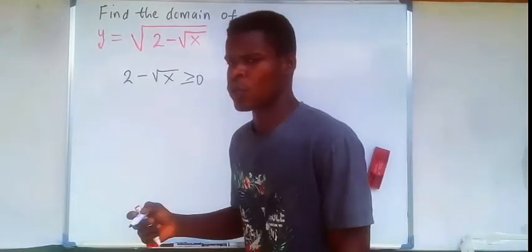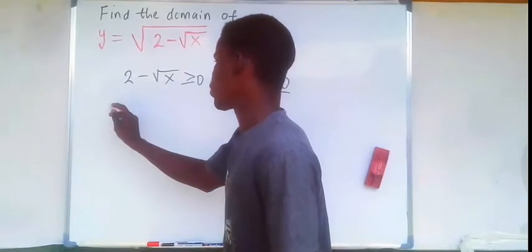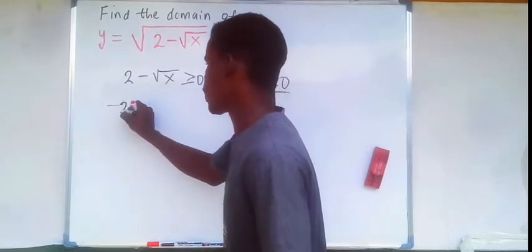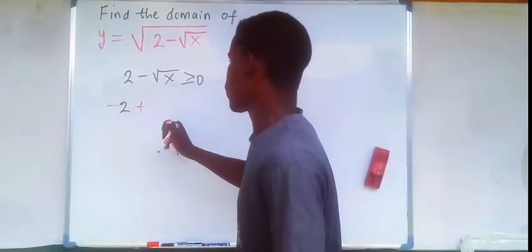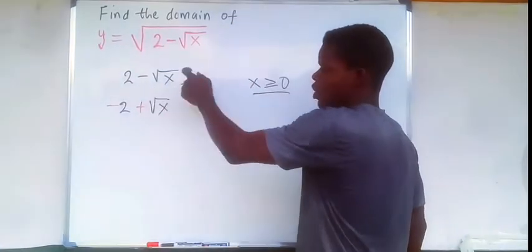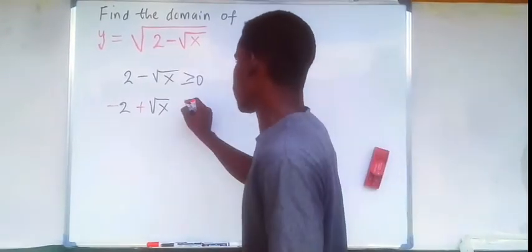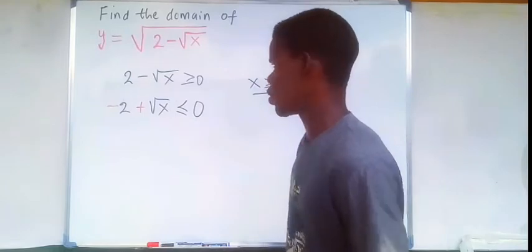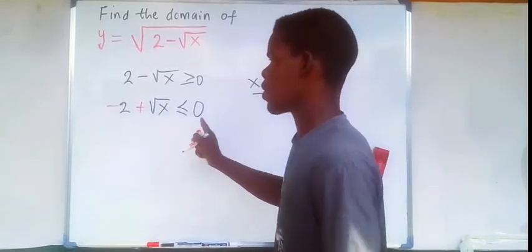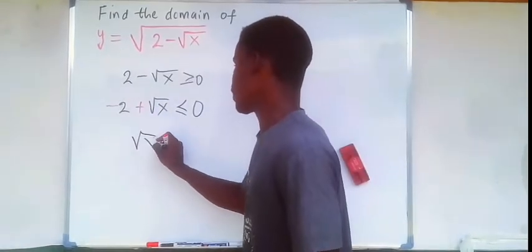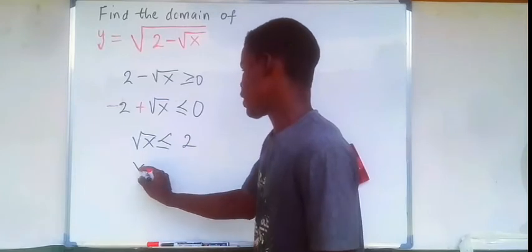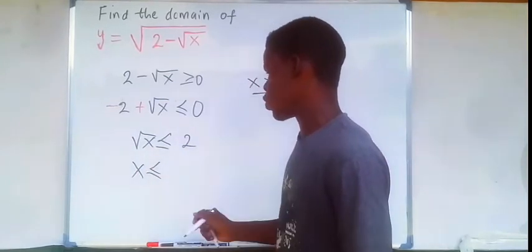Multiply 2 minus the square root of x ≥ 0 through by negative 1. This gives minus 2 plus the square root of x ≤ 0, with the inequality sign flipping. Adding 2 to both sides gives the square root of x ≤ 2. Squaring both sides then gives x ≤ 4.